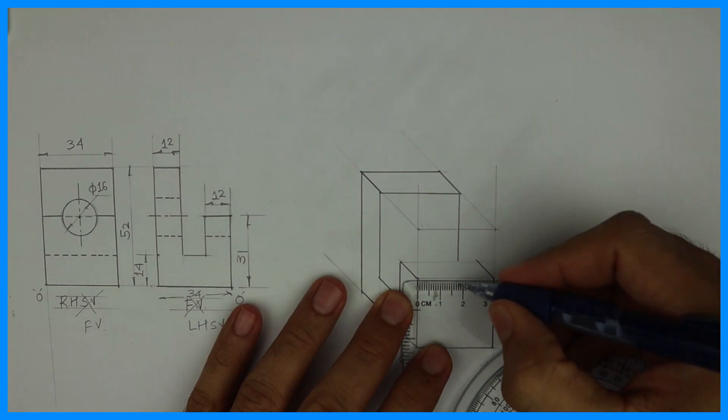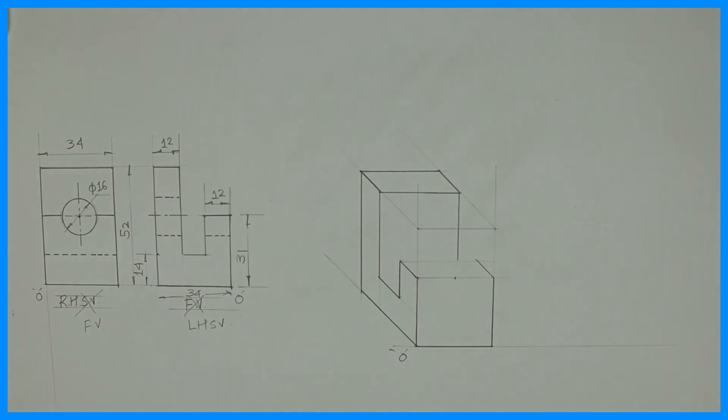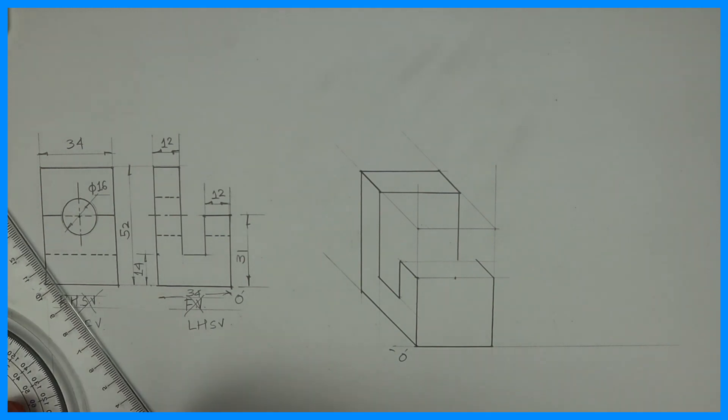Now we need to draw a circle. So we'll take midpoint of this and from there we'll draw radius 8 because diameter is 16. And again if you see in this, we have a circle with a dark line at the diagonal. That means it is in two parts.